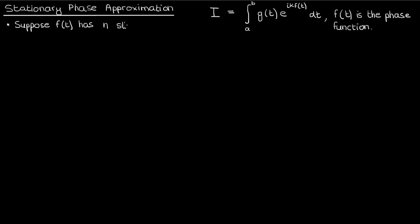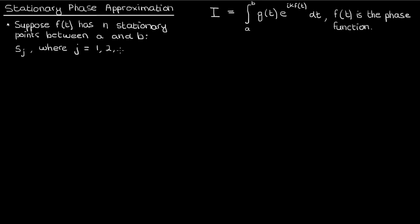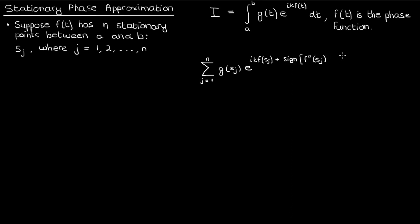Suppose that my phase function f had n stationary points between a and b, which I'll denote using s_j where j is a dummy index from 1 to n. By stationary points I mean a point where the function has a zero derivative. By the stationary phase approximation I can approximate this integral as the sum from 1 to n of the coefficient function g evaluated at the stationary point times the exponential of ik times f, plus the sign of the second derivative of f at s_j times i times pi over 4, times the square root of 2 pi over k times the magnitude of the second derivative of f with respect to the stationary point s_j.